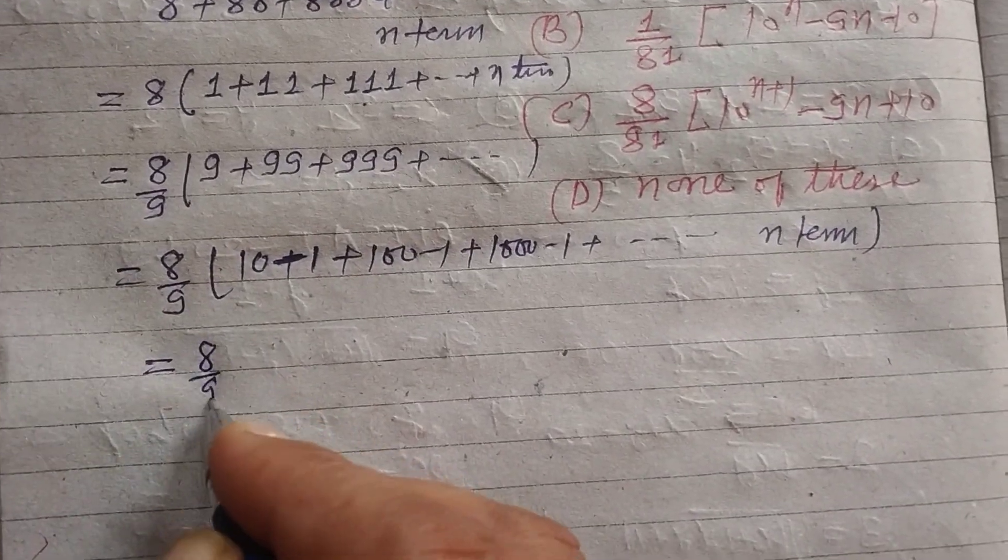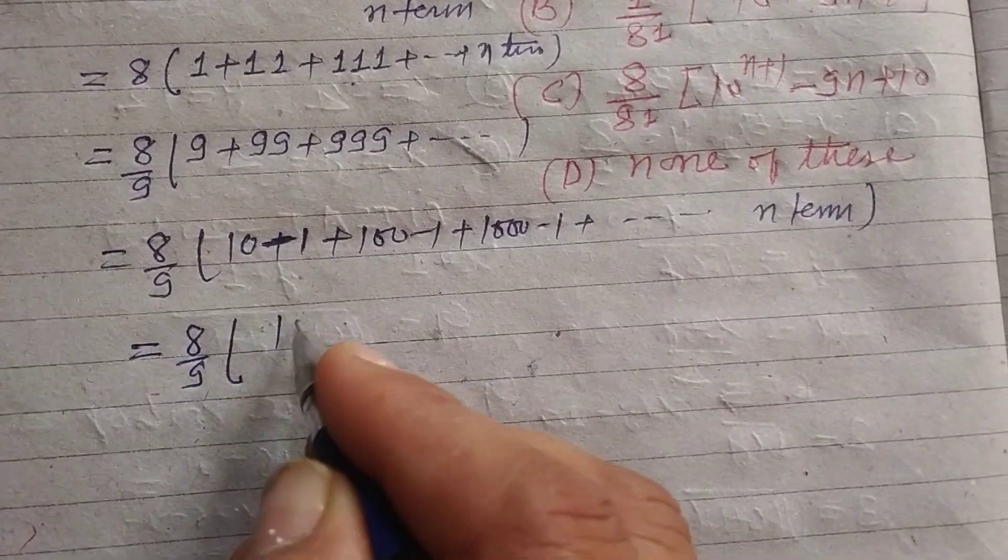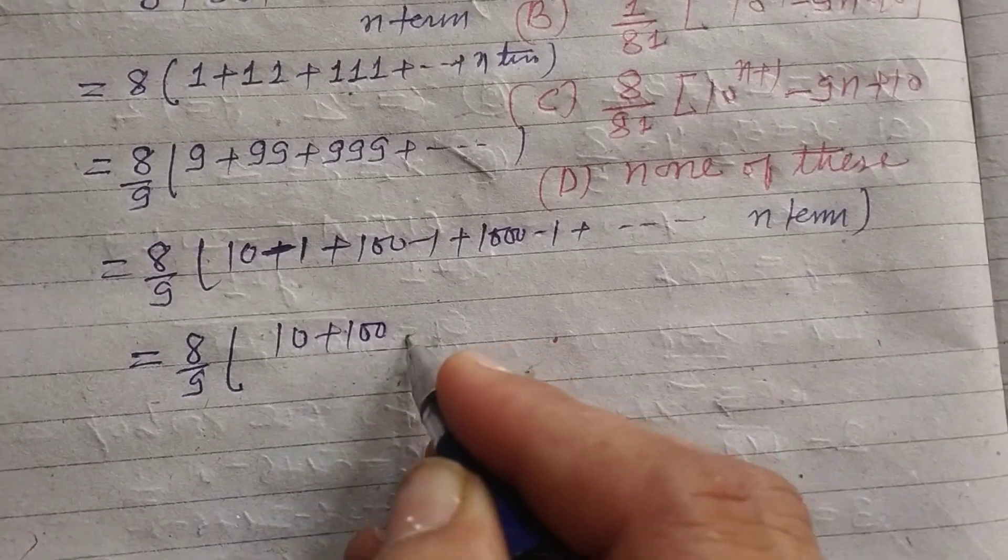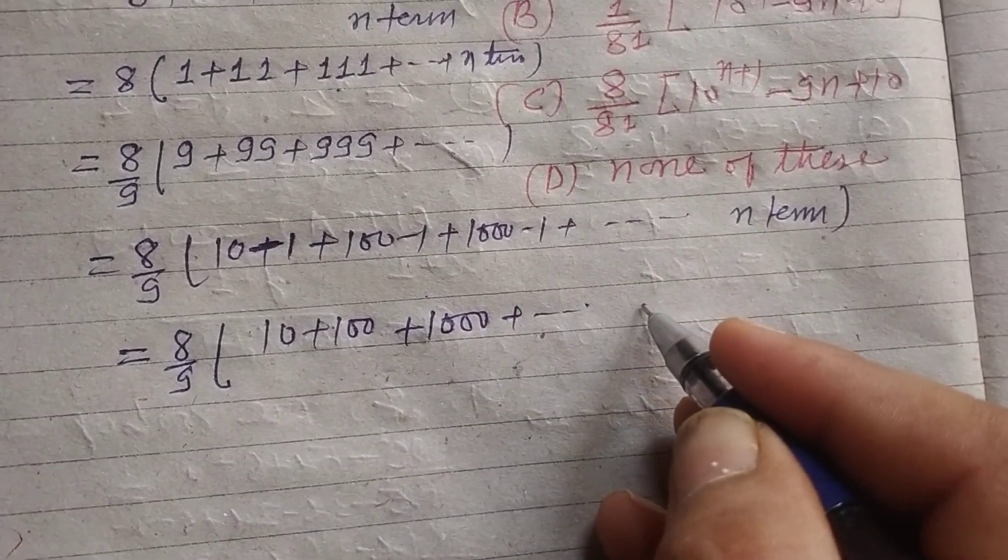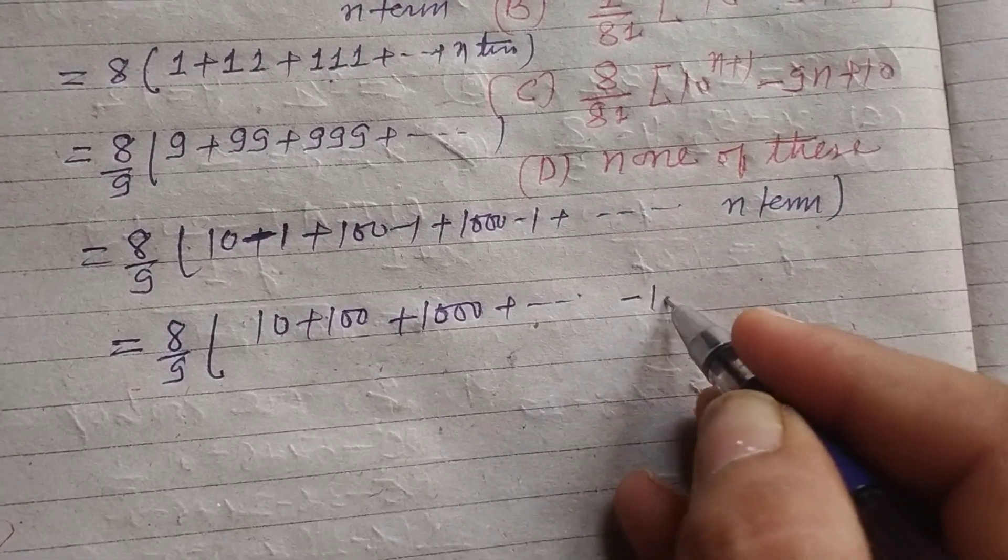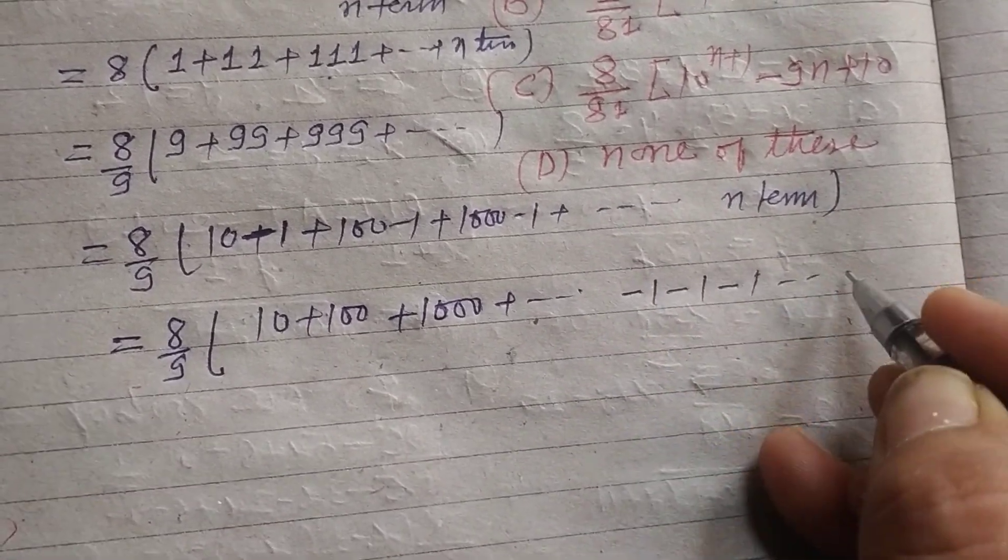So this is 8 by 9 and 10 plus 100 plus 1000 and so on up to n terms, minus 1, minus 1, minus 1 up to n terms.